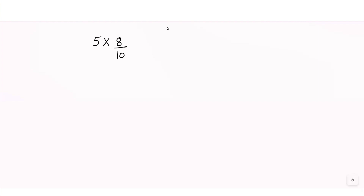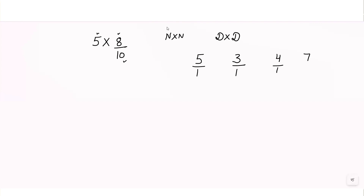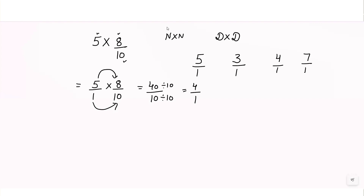The first question is 5 into 8/10. Whenever we are working with multiplication of fractions, we always multiply numerator with numerator and denominator with denominator. Here the numerator is 5 and 8; denominator is 10. Below 5, no denominator is mentioned, so any whole number's denominator is always equal to 1. So we write 5/1 into 8/10, multiply to get 40/10, simplify by 10, and get the answer 4.